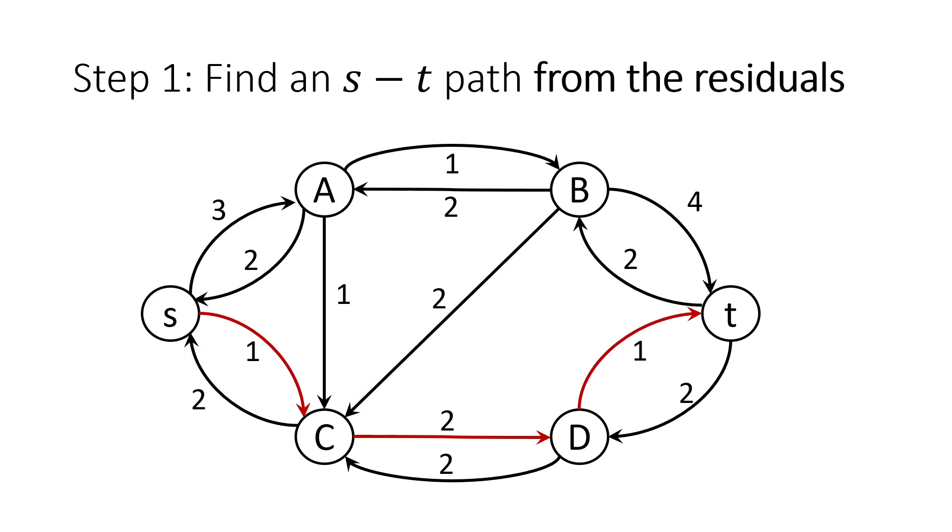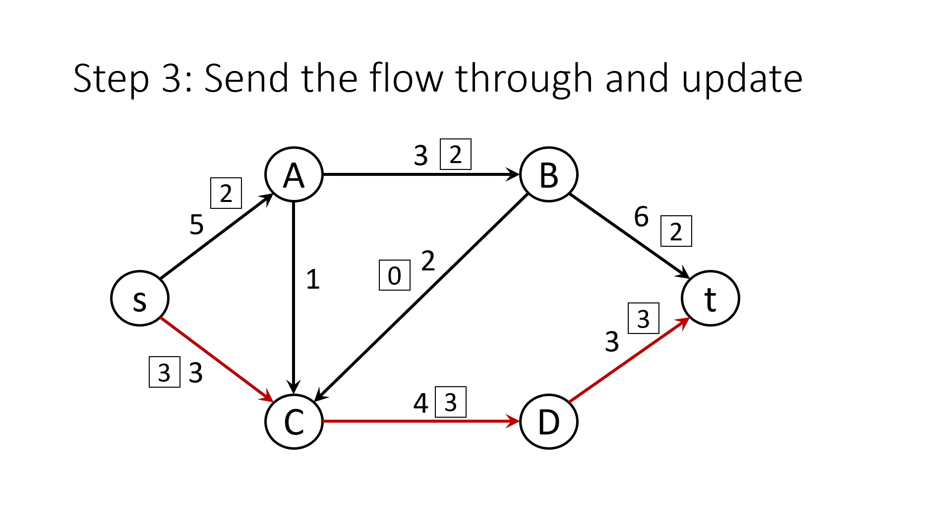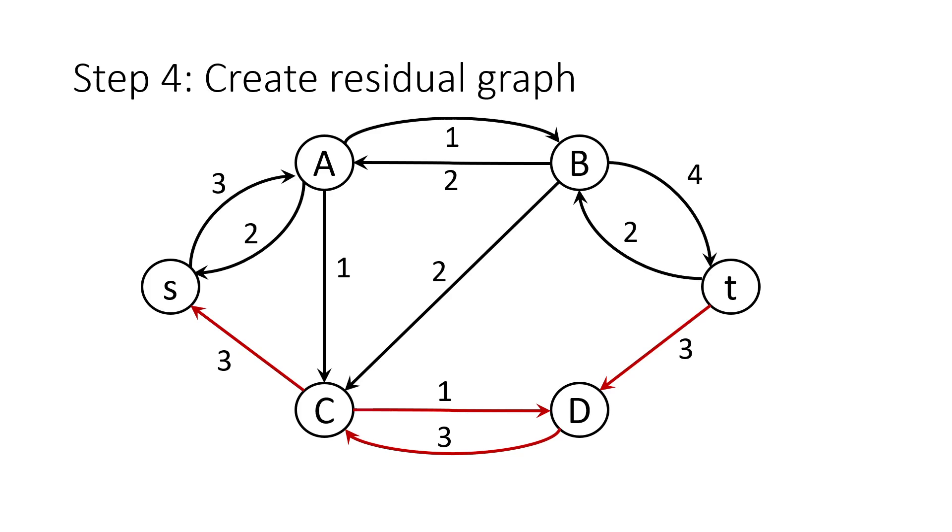Here is our residual graph after we pushed that last flow through the path that we found. Here's another ST path. And the minimum capacity here is 1. Now we've reached a max flow of 5. And here's the residual graph. As you can see, we can't send any more flow through the DT edge as it's only backwards from T.